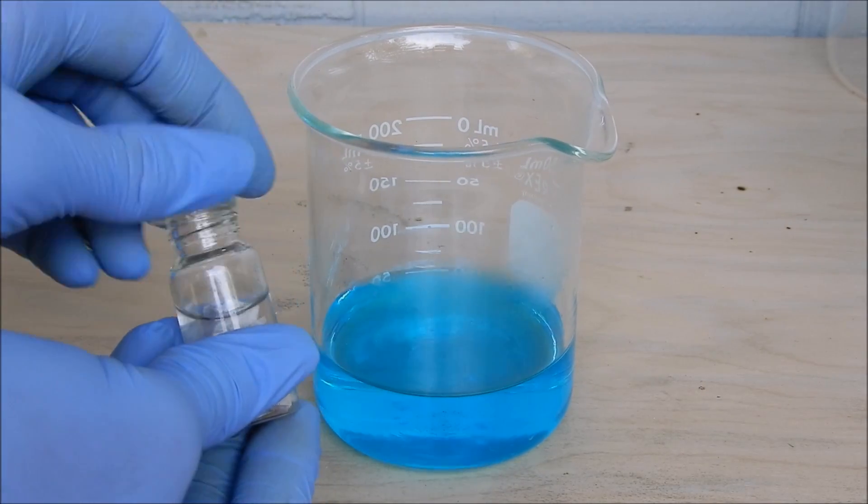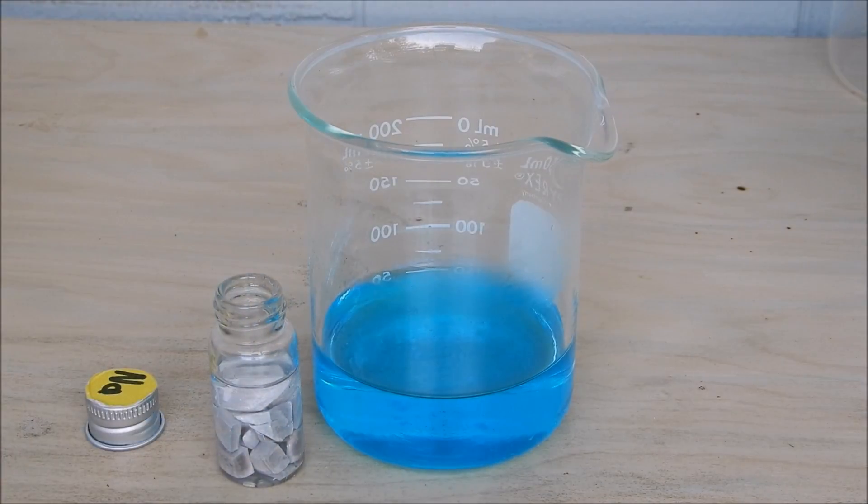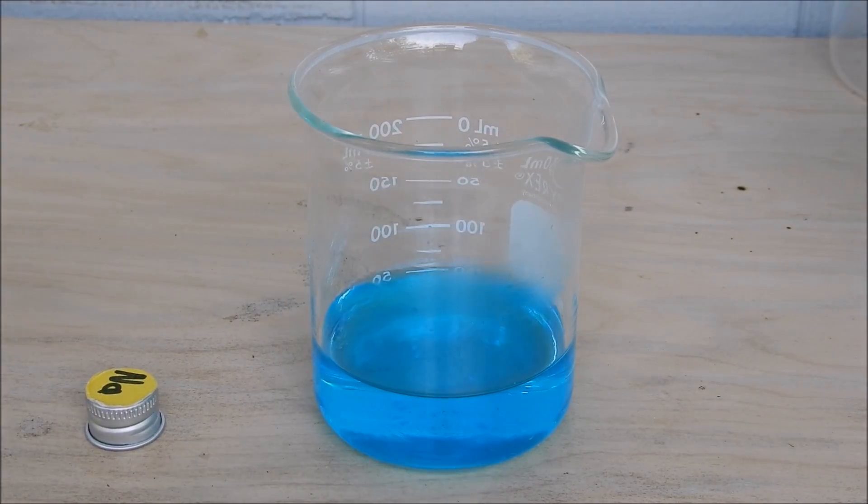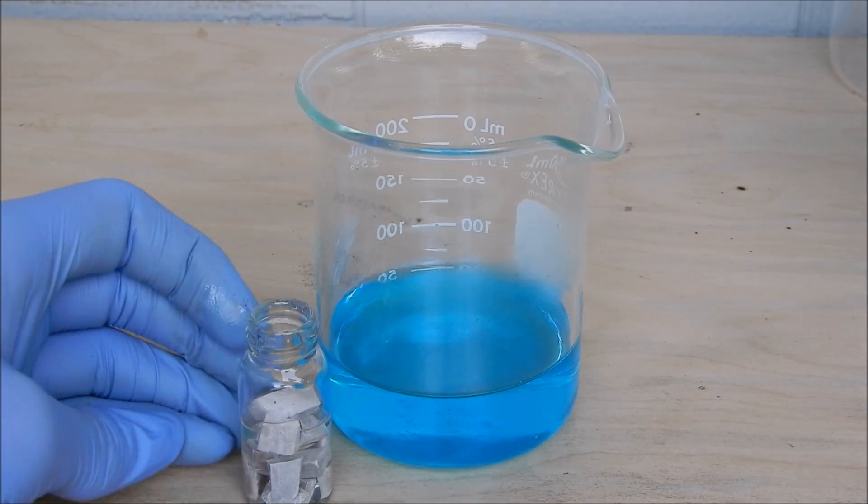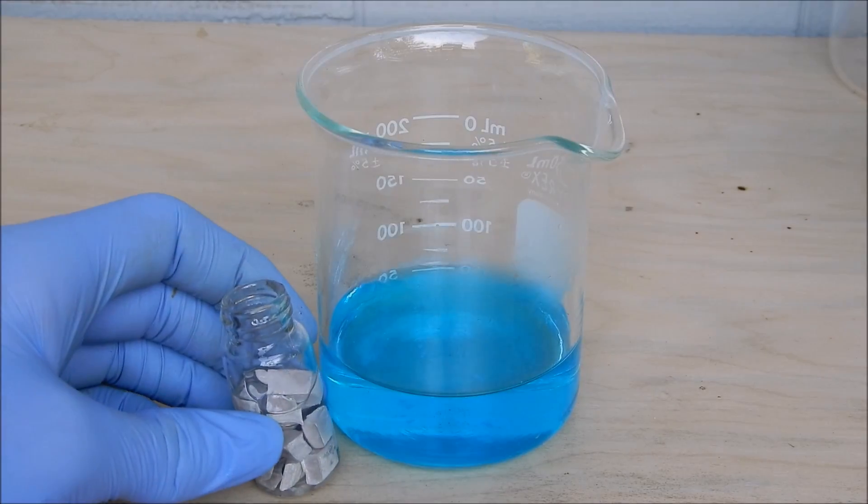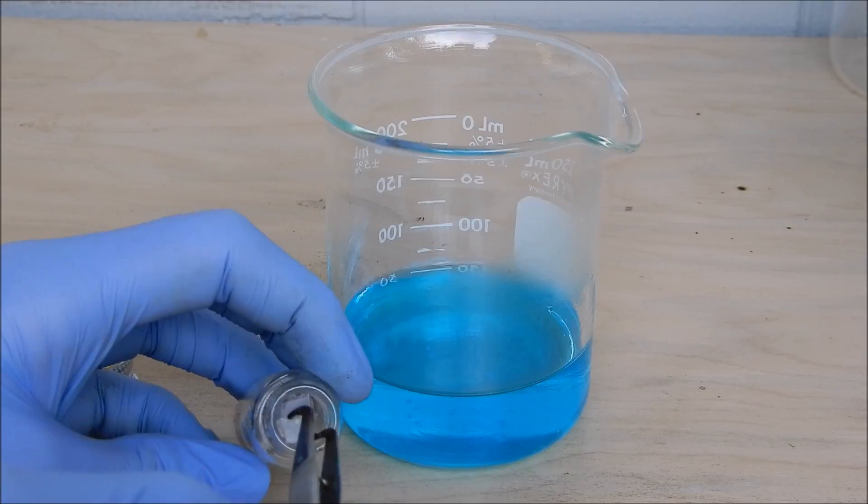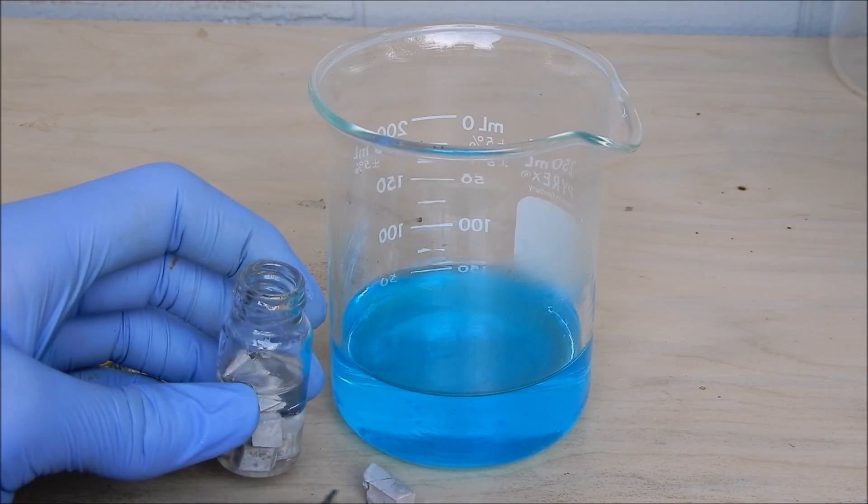What's going to happen is that the sodium metal is going to be oxidized because it loses its valence electron, and the copper two ion in the copper sulfate is going to be reduced to copper metal. Let's take a piece of sodium out. Let's cut this one in half because I don't want to waste my precious sodium.